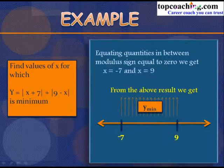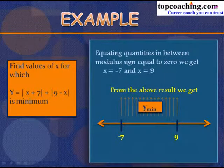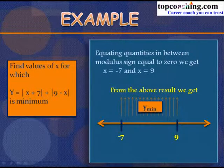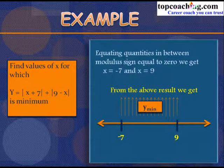The minimum value of y is 16, which is constant for all x between −7 and 9. These were some very important results regarding absolute value. Now we are going to see how to solve quadratic inequalities.